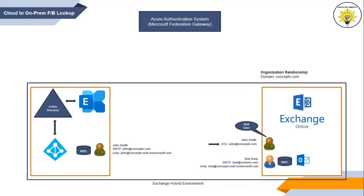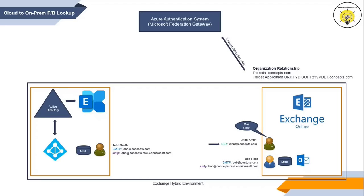If no intra-organization connector or organization relationship is found, availability service will look for availability address space to find the on-premise organization. Assuming an organization relationship is configured in Exchange Online, availability service will check the target Application URI attribute, which holds the value of the federation trust between on-premise and Azure Authentication System. Exchange Online then makes a request to Azure Authentication System for a delegation token to communicate with the on-premise organization, and Azure Authentication System issues that delegation token to Exchange Online.